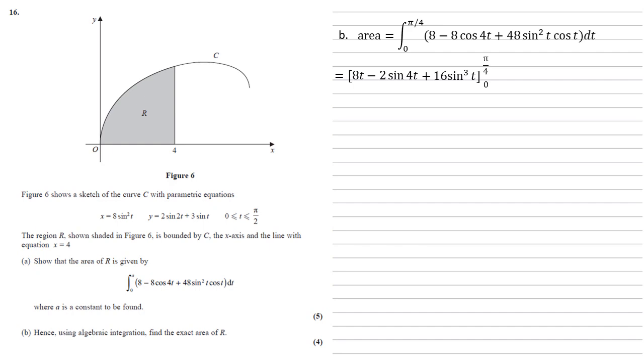We have this in square brackets with bounds pi over 4 and 0. Substituting pi over 4 first, we get 8 times pi over 4 minus 2 sine 4 lots of pi over 4, which is pi, plus 16 sine cubed pi over 4, then subtract the results when we substitute 0.